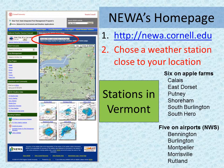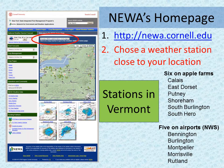There are six apple orchards with NEWA stations: Calus, East Dorset, Putney, Shoreham, South Burlington, and South Hero, and also five airports that provide all the same information except for leaf wetness.